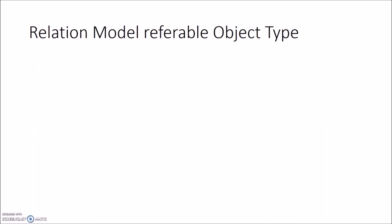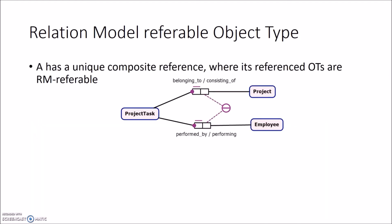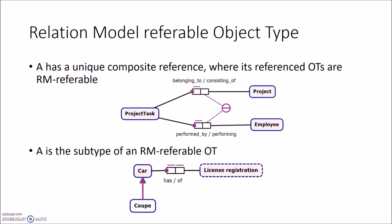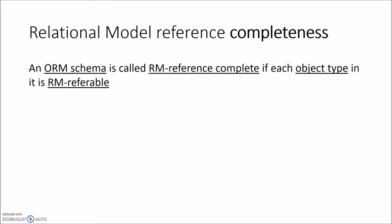The third aspect is when an object type has a unique composite reference and all its referenced object types are also relational model referable. For example, 'project task' is relational model referable because its composition of simultaneously identifying fact types — projects and employees — are also relational model referable. The last aspect is when the object type is a subtype of a relational model referable object type. So when is our schema reference complete? If every object type in the schema is relational model referable.